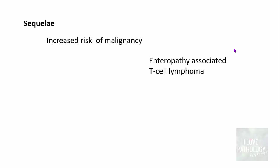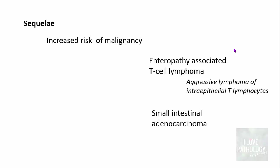Celiac disease carries an increased risk of malignancy. The most common type is enteropathy-associated T-cell lymphoma, an aggressive lymphoma of intra-epithelial T lymphocytes driven by interleukin-15-stimulated proliferation and neoplastic transformation. The second important type of malignancy is small intestinal adenocarcinoma.